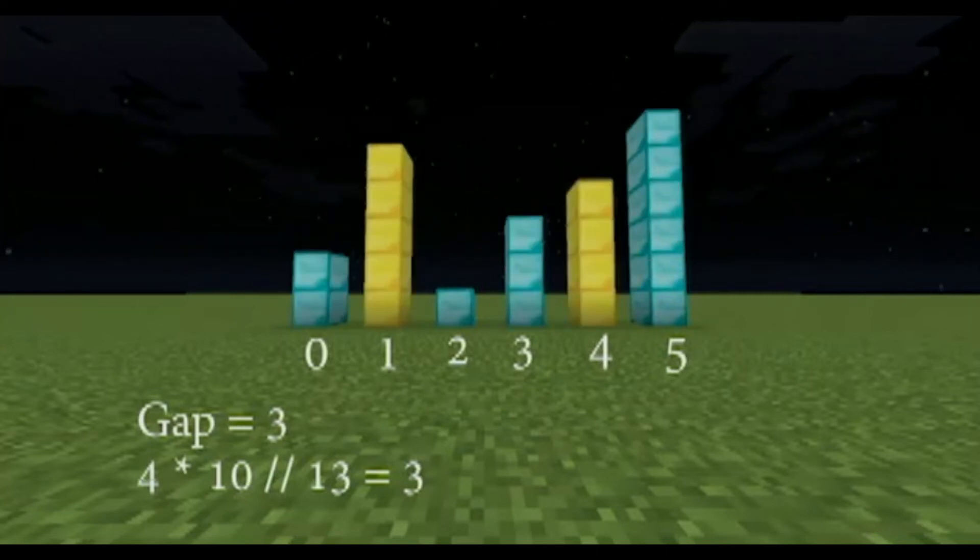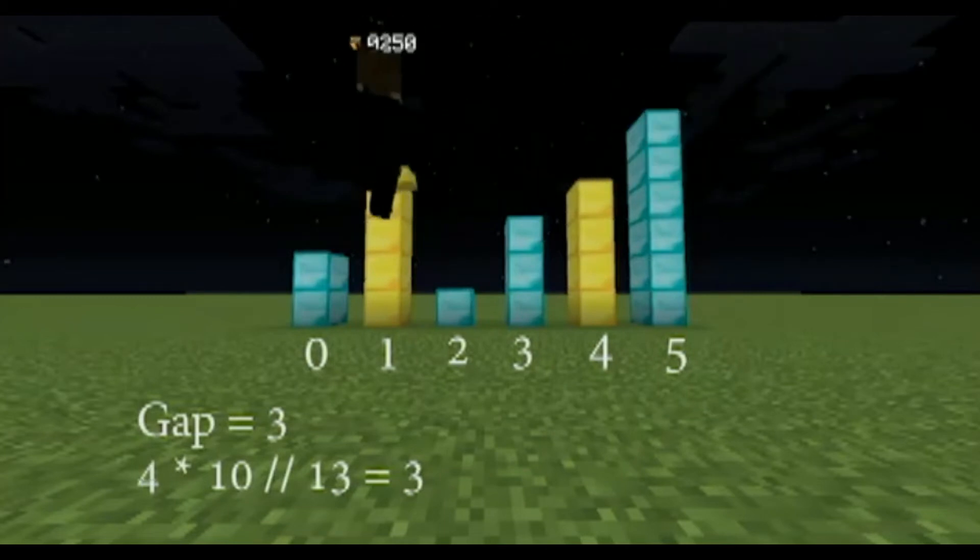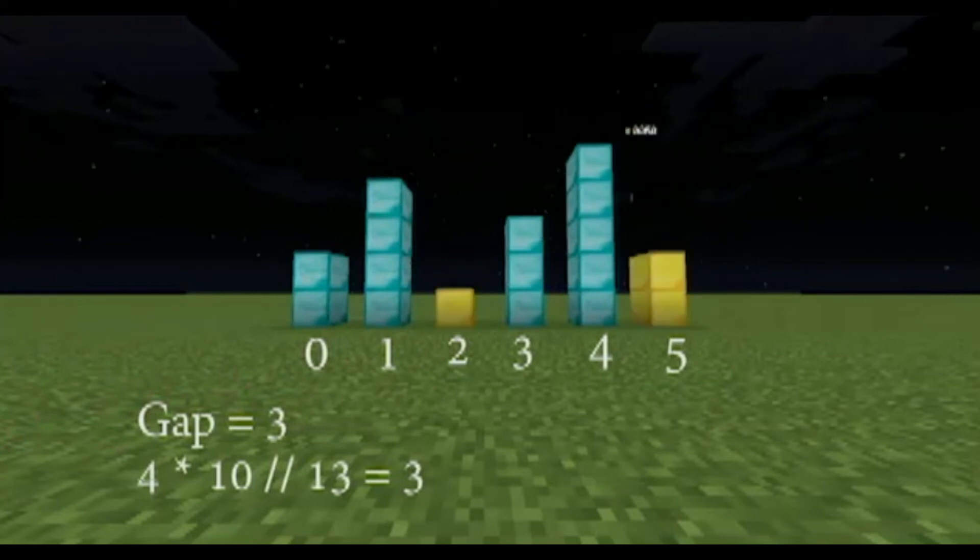Then we compare the 5 and the 4. They are also out of order, so we swap them again. The 1 and 6 are in the correct place, so we don't swap them.